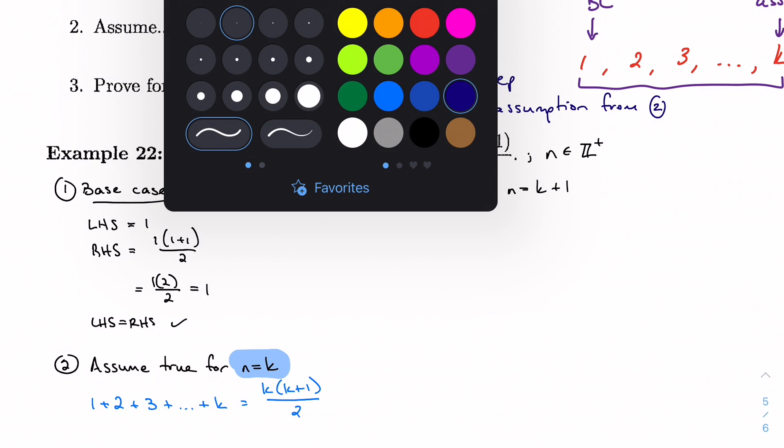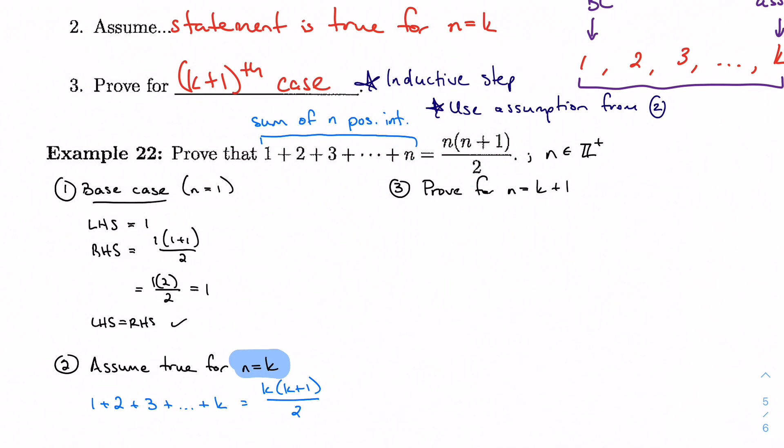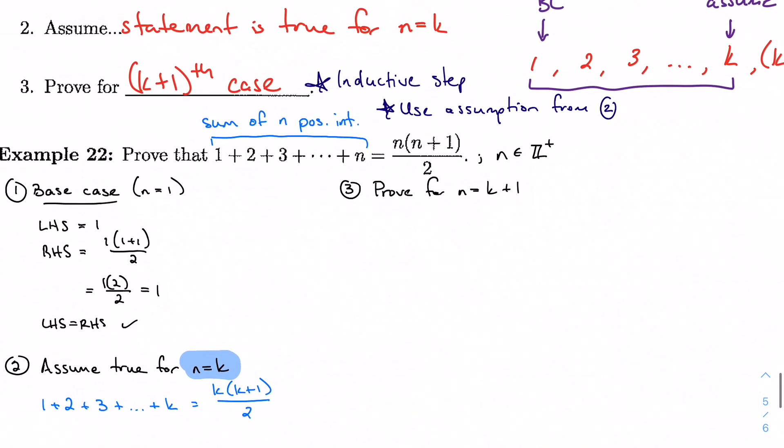The first thing I want to look at is what does this even mean? What does it mean to prove for k plus 1? What am I trying to look at? I want to show or I want to prove that 1 plus 2 plus 3 plus dot dot dot plus k plus 1, all the way up to the k plus 1 case, is equal to (k plus 1) times (k plus 1 plus 1), so (k plus 2) over 2. And I got that just from substituting into my given statement. I just took all my n's and replaced them with k plus 1.